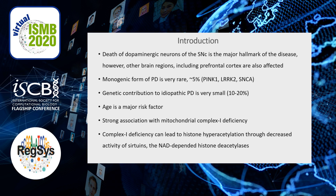One of the most robust findings is mitochondrial complex I deficiency. Originally described in substantia nigra, however, recently we have demonstrated it also occurs in other regions of the brain. And it's really interesting because complex I deficiency can lead to histone hyperacetylation — so decreased activity of the NAD-dependent histone deacetylases, known as sirtuins.